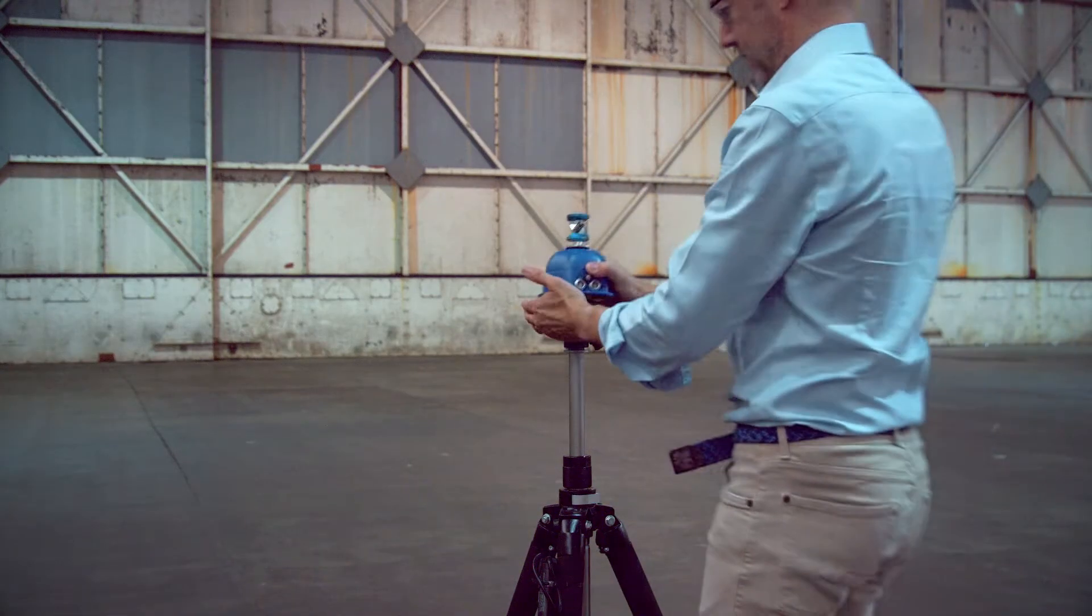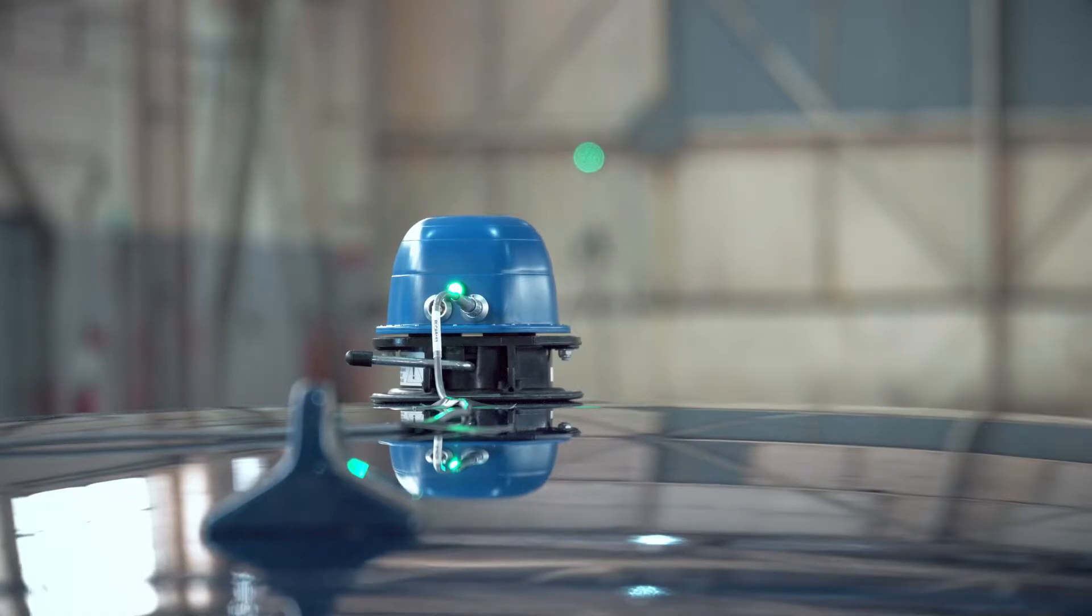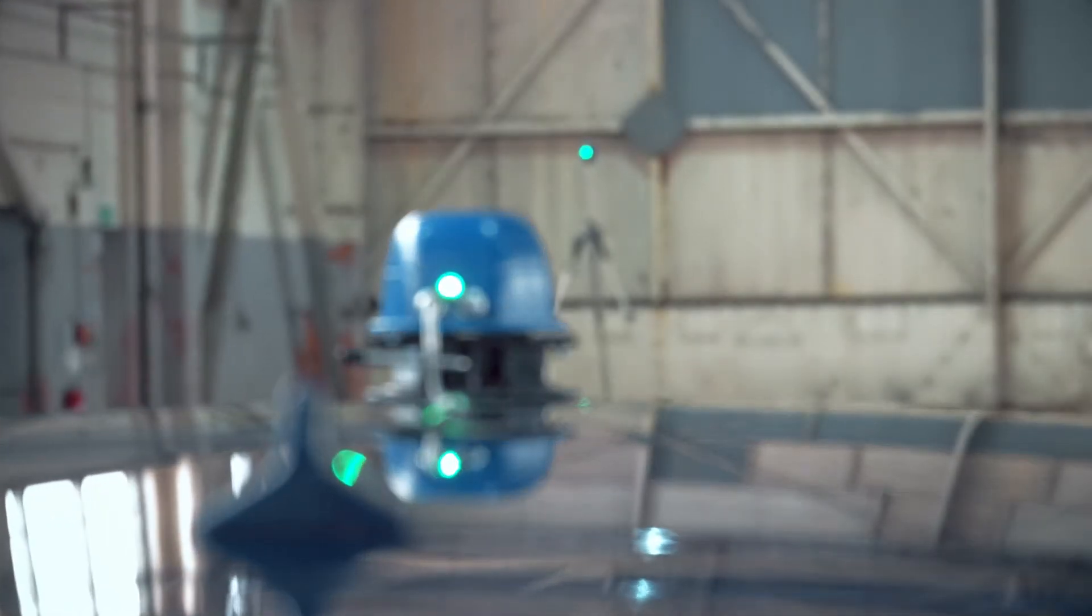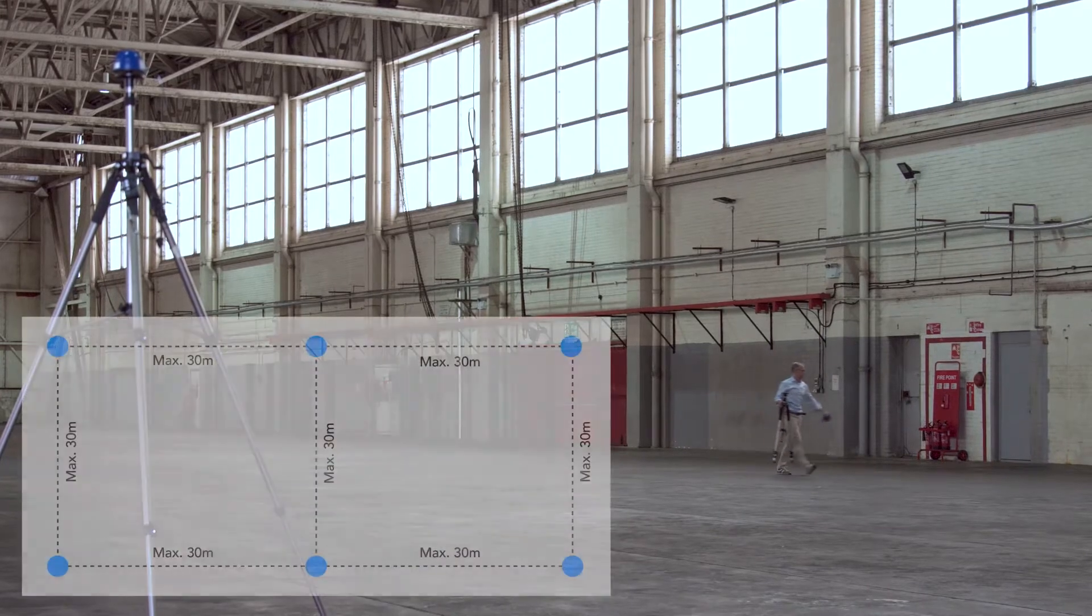Now you can start setting up the beacons. The VIPs receiver will need at least four beacons in view at any one time, however, in order to get good accuracy, we recommend that you use six or more.